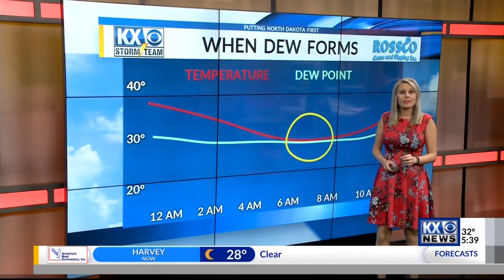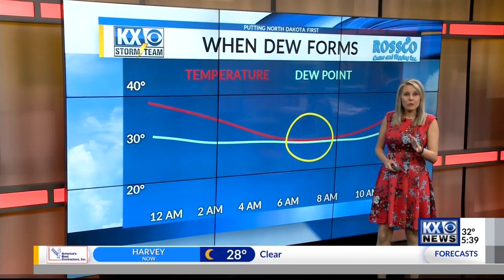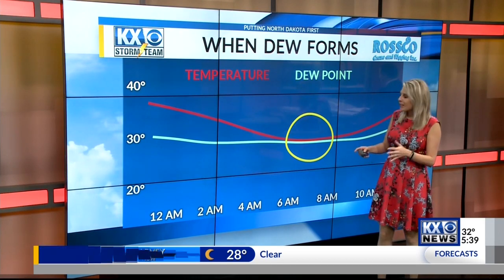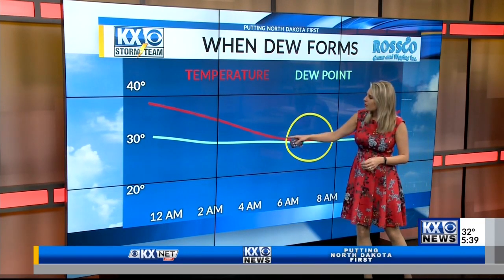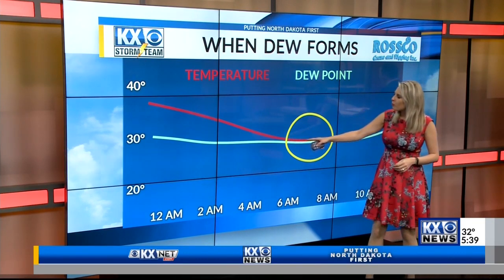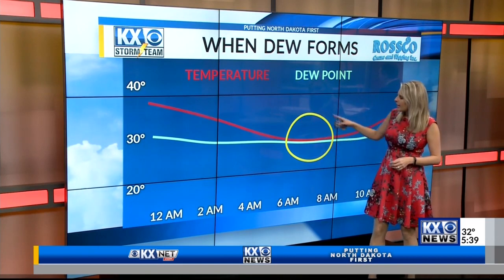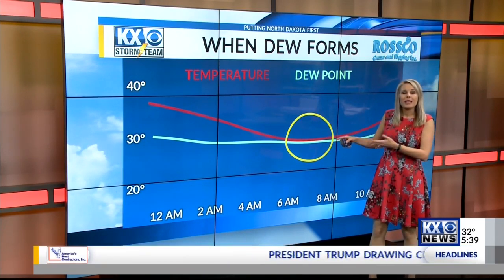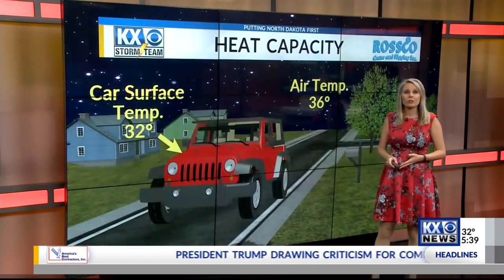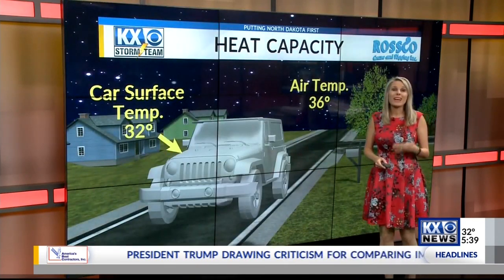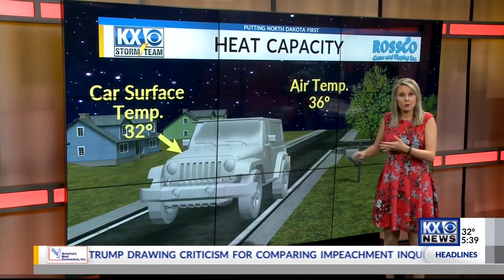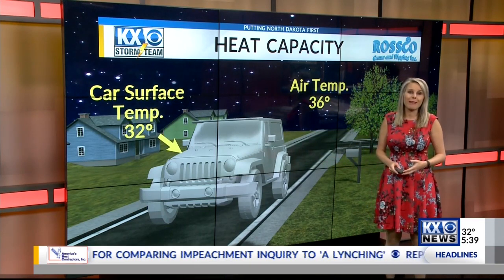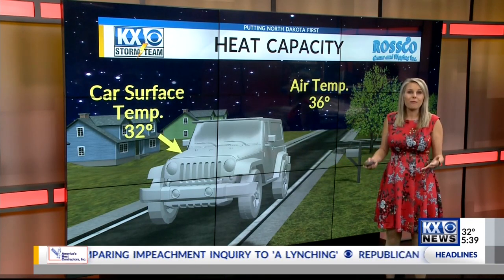As the temperature cools at night, it cools to the dew point, and this makes for saturated air — that's when dew forms. You can see the temperature here in red and the dew point in green, and this is saturation when they meet together. If the temperature is 32 degrees or colder, that's when frozen dew forms — and the car would be at that point even if the surrounding air is above freezing.